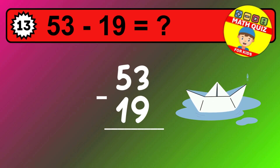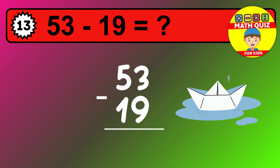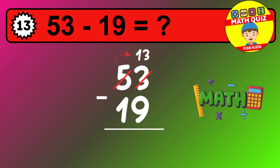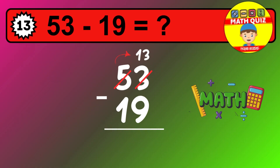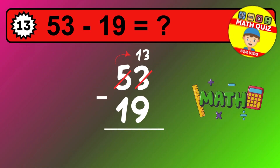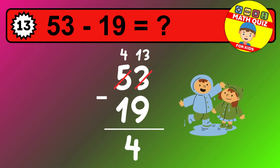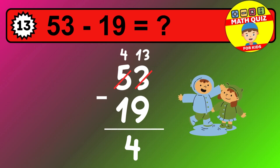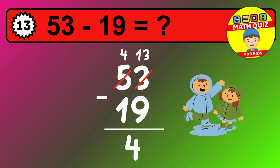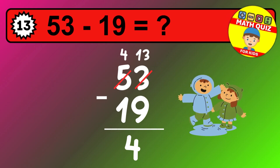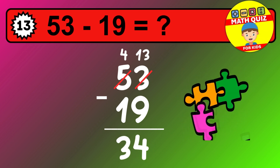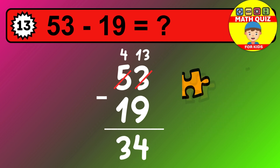Let's solve this step by step. We start with the units. 3 minus 9 is not possible, so we need to regroup. We take one 10 from the tens column. Now we have four tens and the units become 13. Now we subtract. 13 minus 9 is 4. Then we go to the tens. 4 minus 1 is 3. The final answer is 34.